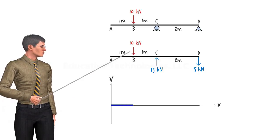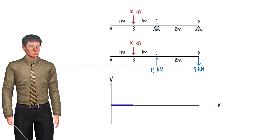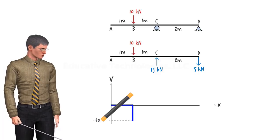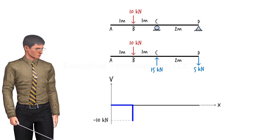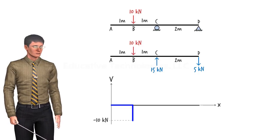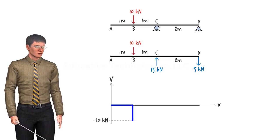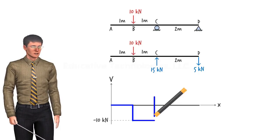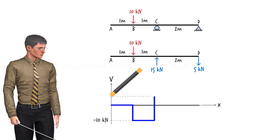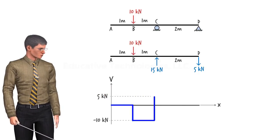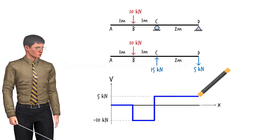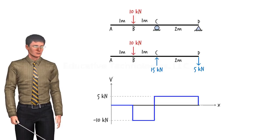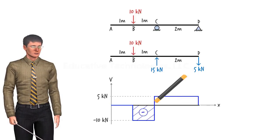The downward force at B causes a drop in the shear value — shear drops from zero to negative 10 kilonewtons. So shear just to the right of B is negative 10 kilonewtons. Since there is no load applied to segment BC, shear remains constant throughout the segment. Then at C, shear jumps up by 15 units, going from negative 10 at the left side of C to positive 5 at the right side. Shear remains constant within CD, then drops by 5 units at the very end. So this is the shear diagram for the beam.